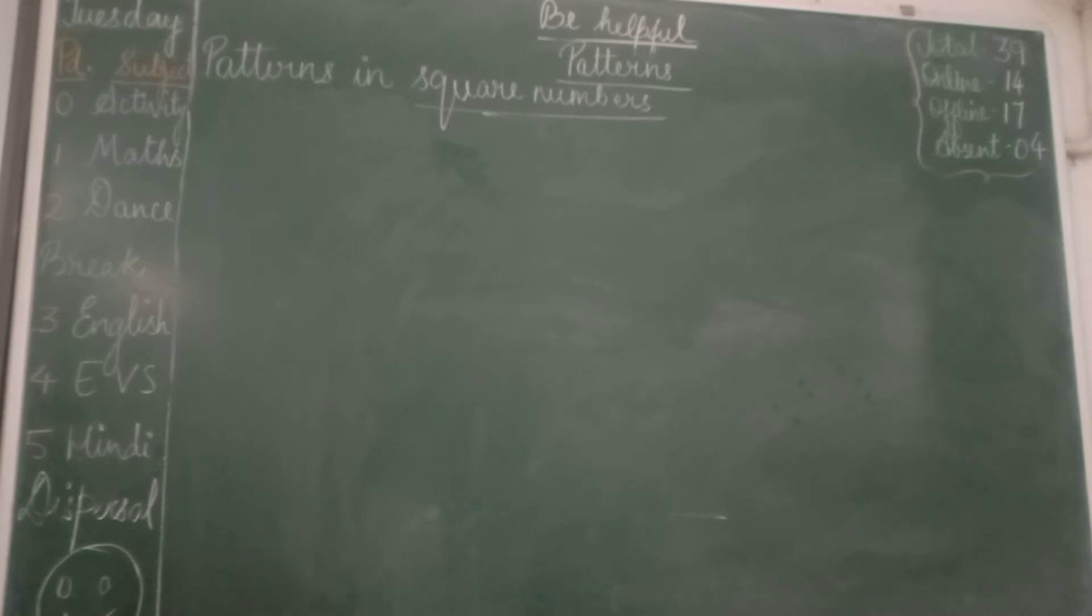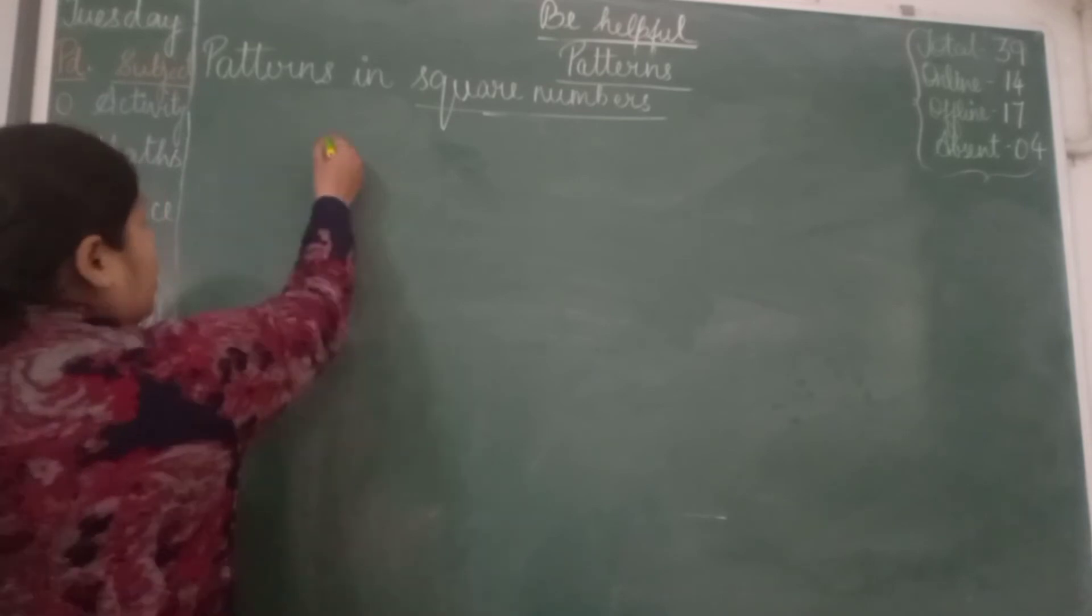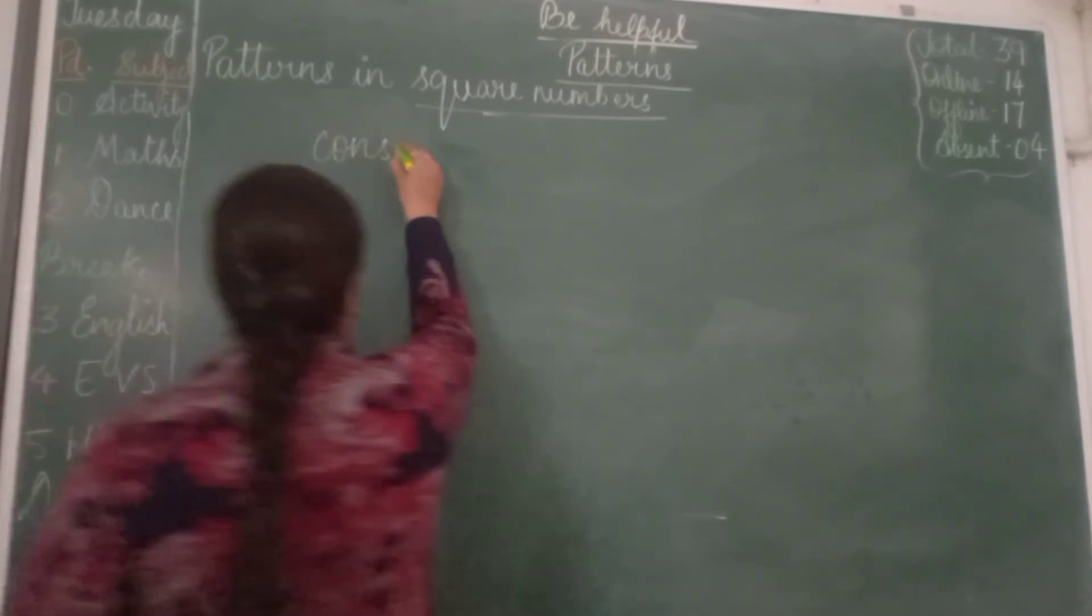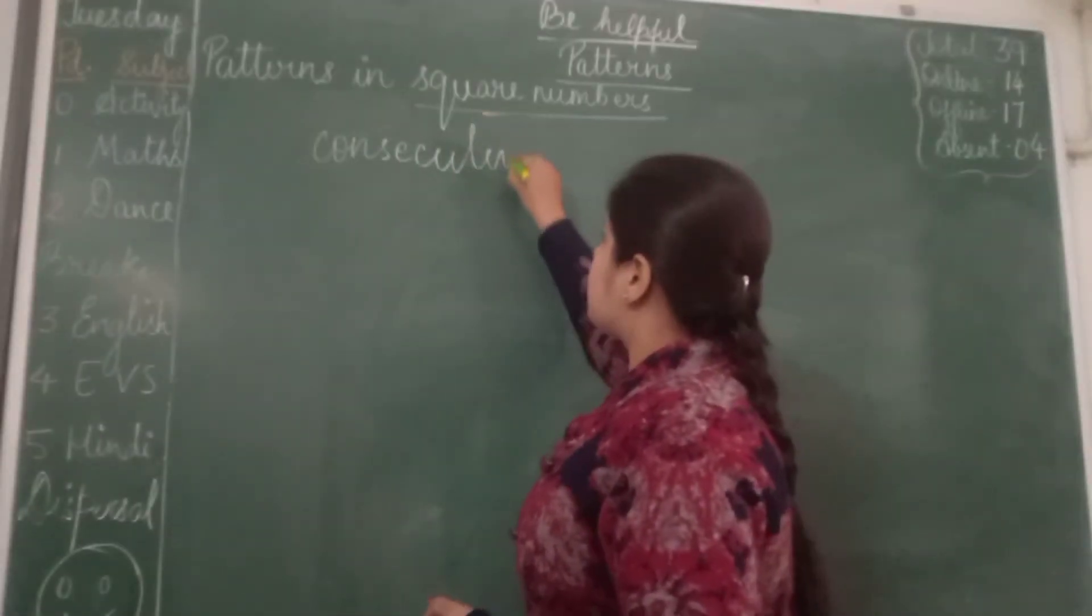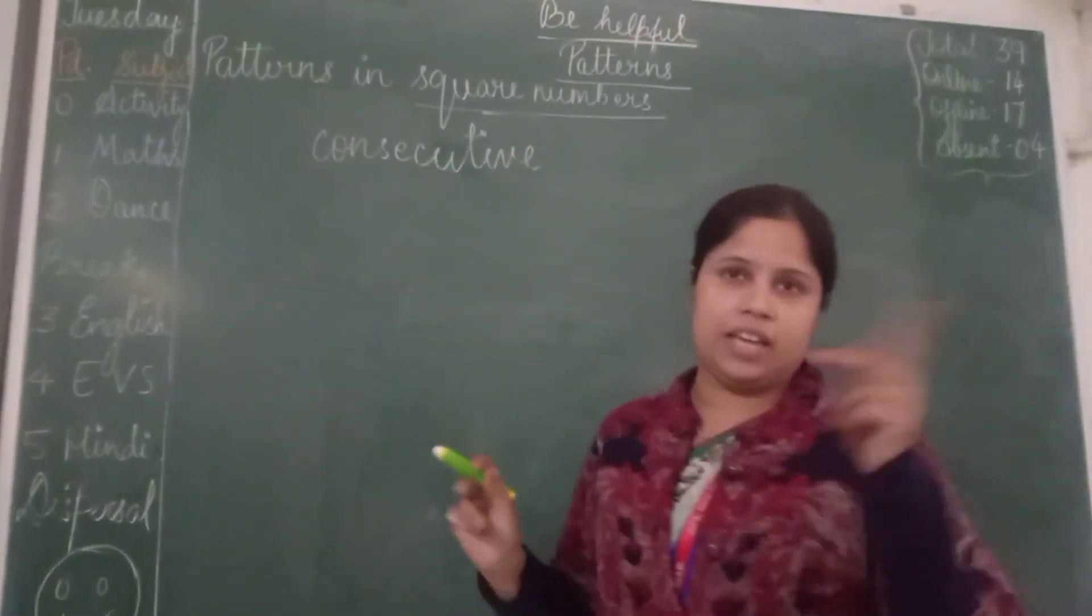So the property is that the difference of two consecutive square numbers is an odd number. For example, consecutive - what does the word consecutive mean? Consecutive means adjacent, next to each other.